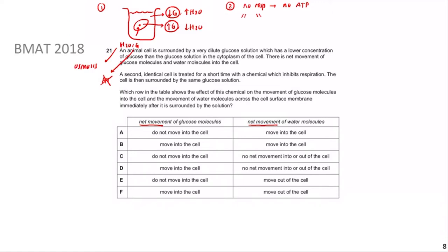Since glucose cannot be actively transported without ATP, it doesn't move. This leaves us with options A and B. With the glucose not moving and water still moving in, the answer is A. Some students ask why glucose wouldn't diffuse out since the concentration is higher inside - but passive diffusion works for lipid-soluble, non-polar substances. Glucose is polar, so it requires channels for facilitated diffusion, and this cell may not have channels to move glucose outward.